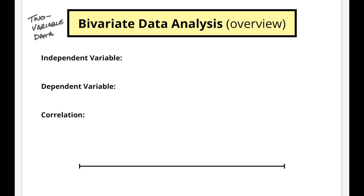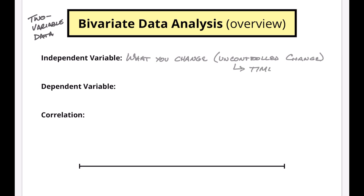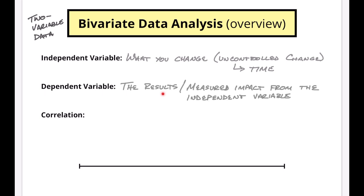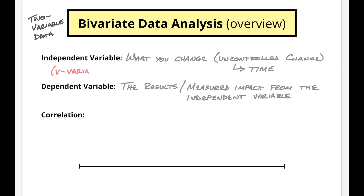In bivariate data analysis, you have what we call the independent variable. The independent variable is generally what you change — sometimes it's considered an uncontrolled change, like time, because things change over time. Basically, independent variables are what you're changing in an experiment or in a relationship. Dependent variables are the results or the measured impact from the independent variable. When we graph these, the independent variable is always the x variable and the dependent is always the y variable.